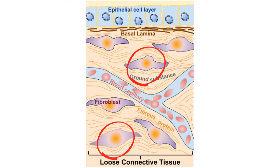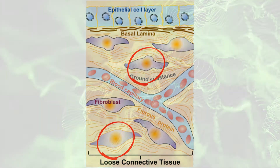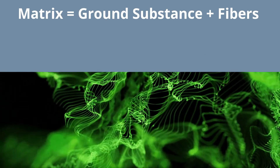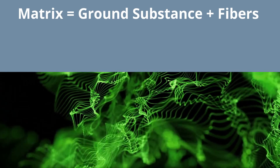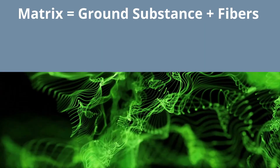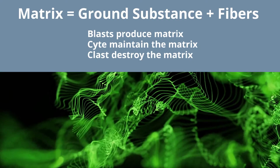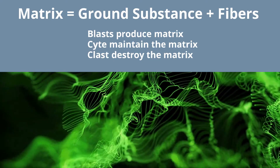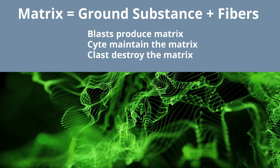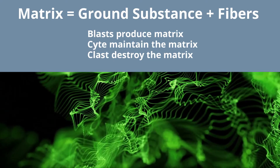And finally, cells. The cells of connective tissue are different from epithelial in that they are not directly attached to one another. The fibers and ground substance combined are called the matrix. Cells of connective tissues end as follows: blasts produce matrix, cytes maintain matrix, and clasts destroy matrix.